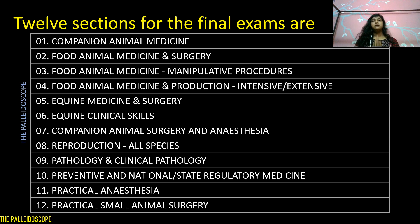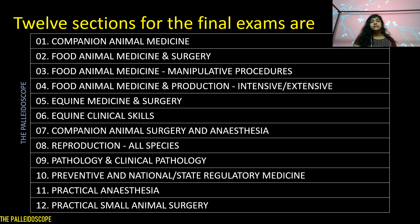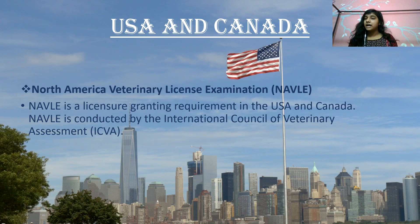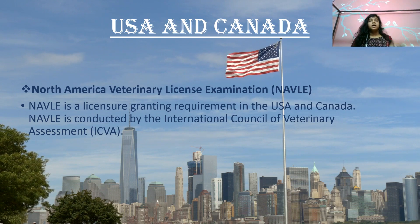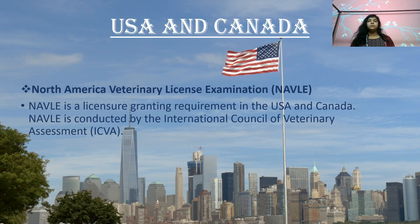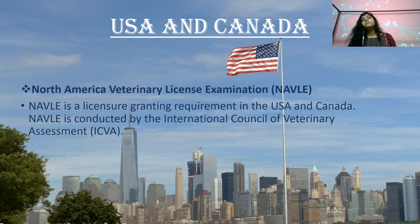The main focus areas of the 12 sections are equine, companion animals, and small animals. The eighth point notably covers reproduction for all species. Moving on to USA and Canada — the very famous NAVLE exam is there.